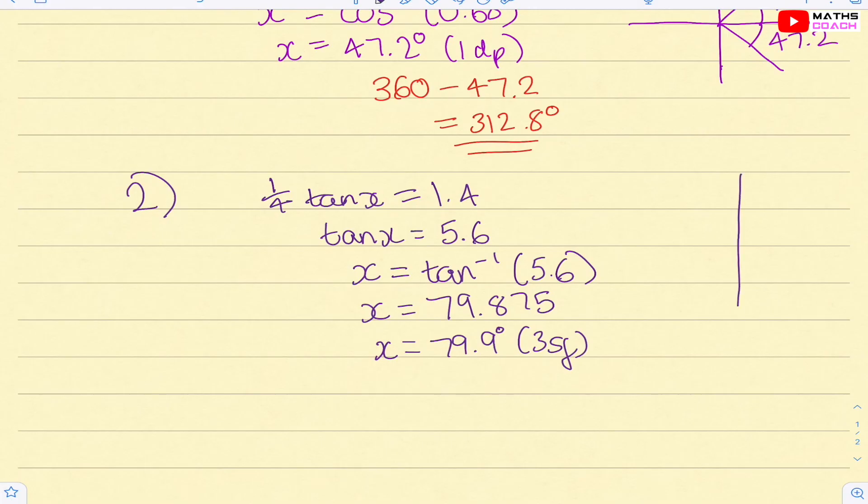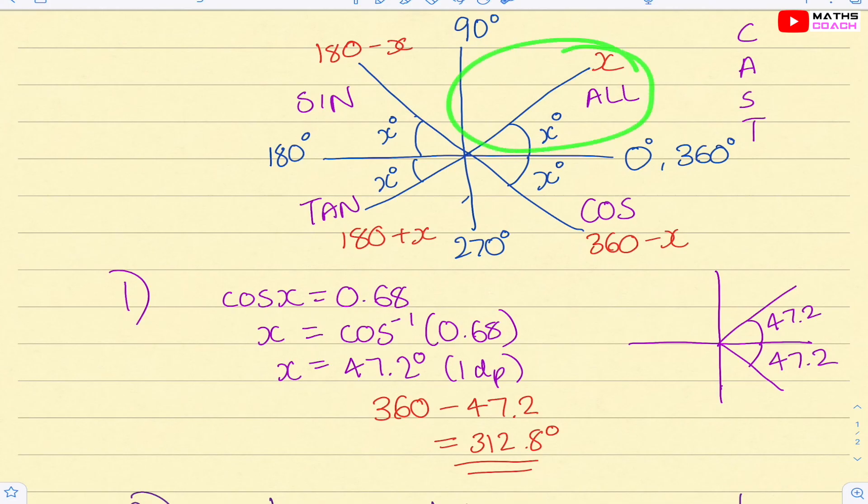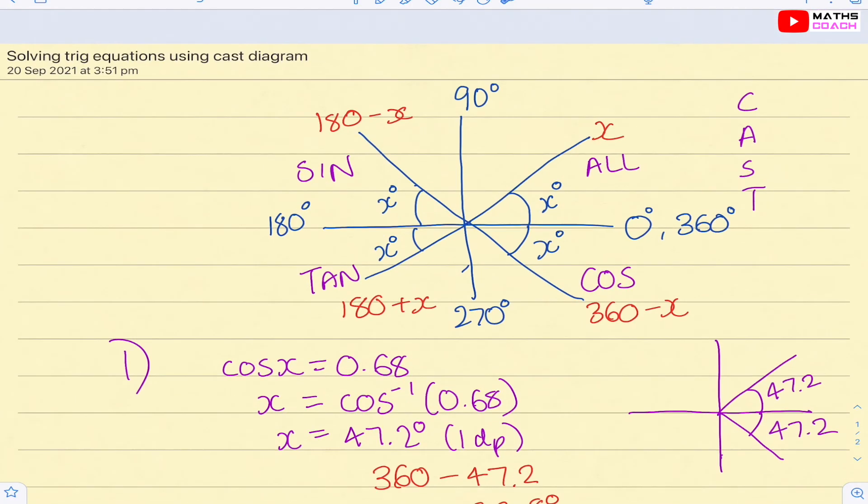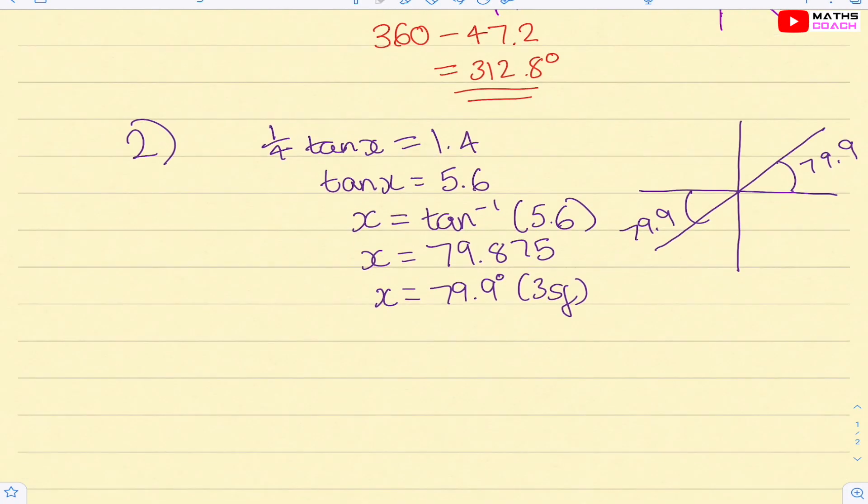So again, let's go back to drawing our CAST diagram. We have the acute angle. Now, here we want to be careful because tan is only positive in this quadrant and this quadrant. So we can draw our acute angle here and here. So we have an acute angle of 79.9 here and here. So we've got this angle accounted for already, this 79.9, because it is the initial angle. However, we need to go all the way here. And if we look at our initial diagram, if we end up here, it's 180 plus x.